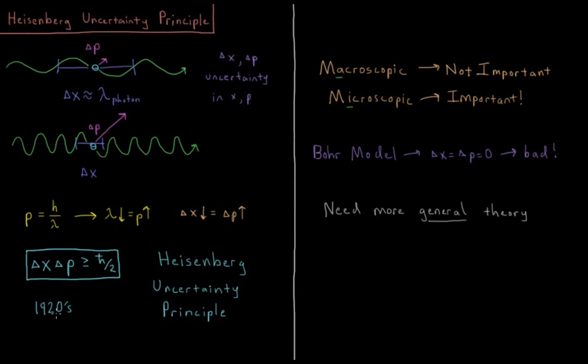It was Heisenberg in the 1920s who actually discovered that the quantitative nature of this uncertainty is that for any given particle, the uncertainty in position times the uncertainty in momentum is greater than or equal to h-bar over 2, or Planck's constant over 2 times 2 pi, Planck's constant over 4 pi.